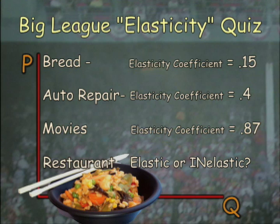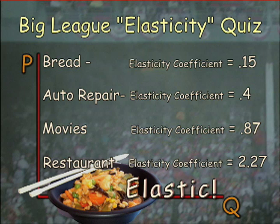Finally, a restaurant meal, 2.27, quite elastic. Lots of us would stop eating out if current prices rise.